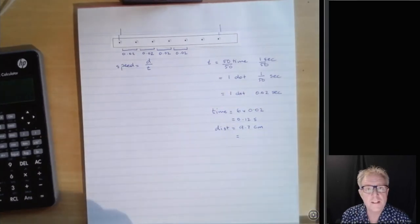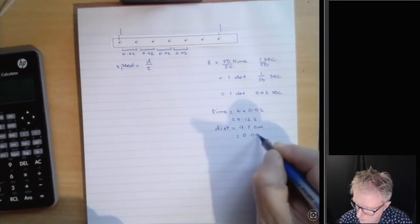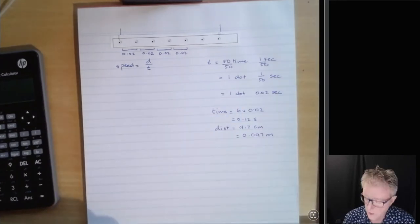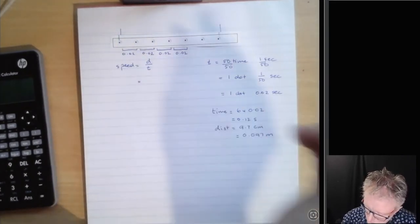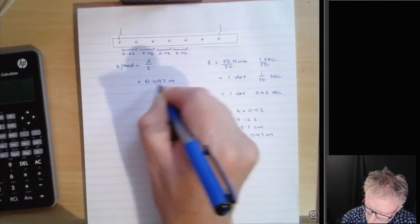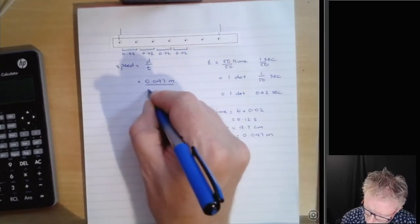And we want to convert that to meters, so 9.70, as we divide that by 100, 0.097 meters. So now we have our two things we can put into our equation. So our distance is 0.097 meters. The time is our 0.12 seconds.